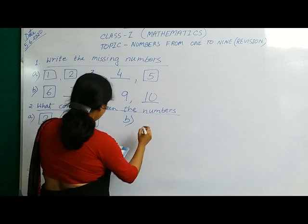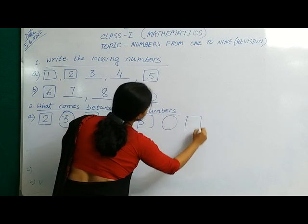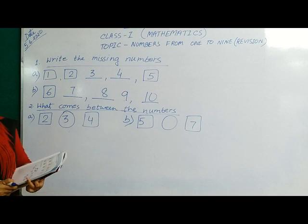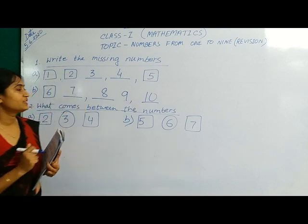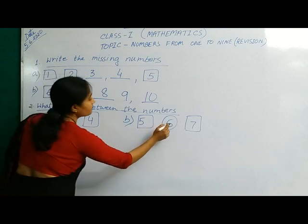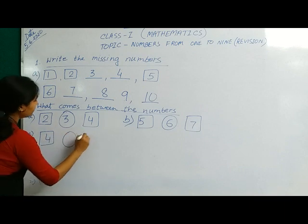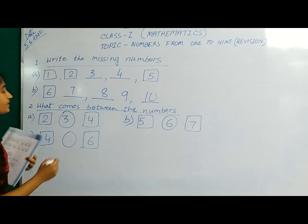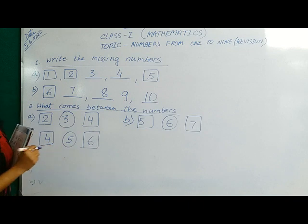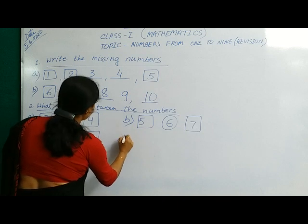Next number. 5 and 7. What comes 5 and 7? You all know. 6. 5 and 7 between number is 6. Next number. Number C. 4 and 6. What comes between 4 and 6? 4 and 6. 5.